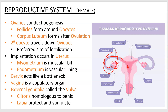The cervix is kind of the bottleneck — a little restricted opening. There's an internal os and an external aperture. Basically, it's there to keep the baby from getting out too soon. It just really takes a lot of work to get the baby out.